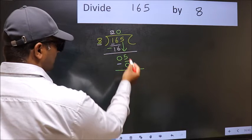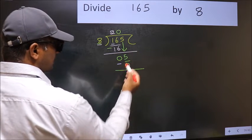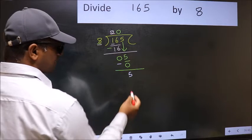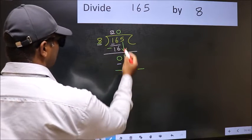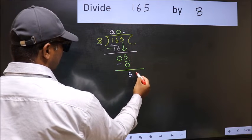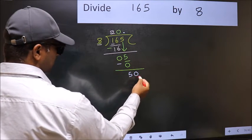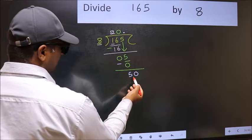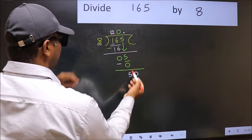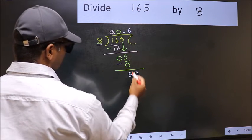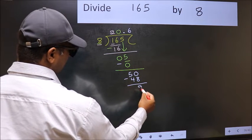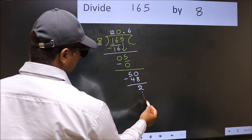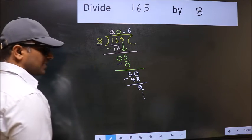Over here, we did not bring any number down, and 5 is smaller than 8. So now you can put dot and take 0. So 50. A number close to 50 in 8 table is 8 times 6, 48. Now you should subtract. We get 2, and continue the division. I am not doing that.